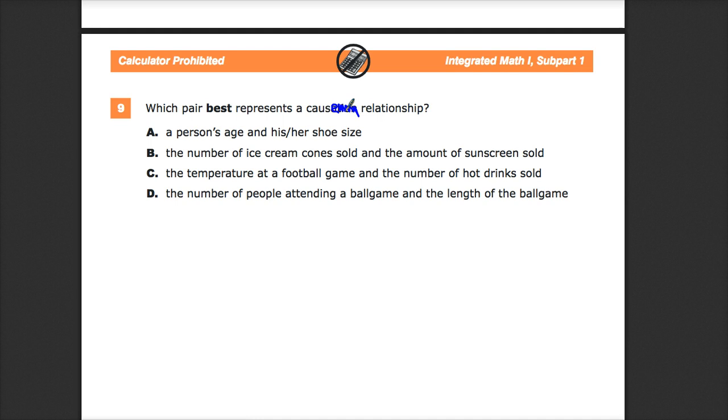B, the number of ice cream cones sold and the amount of sunscreen sold. There's probably a correlation, because if I'm eating ice cream, I'm probably also buying sunscreen, at least if I'm doing it in a mass amount. But I don't buy ice cream because I bought sunscreen. They just happen to happen at the same time.